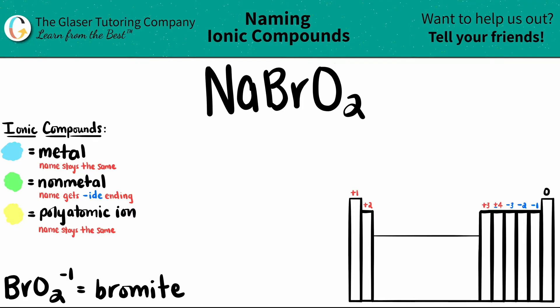Keep in mind that your polyatomic ions are never going to be on the periodic table — you have to memorize them. That's why I wrote down the one we're going to use today. BrO2, which is always a negative one charge because it's an ion, is called bromite.